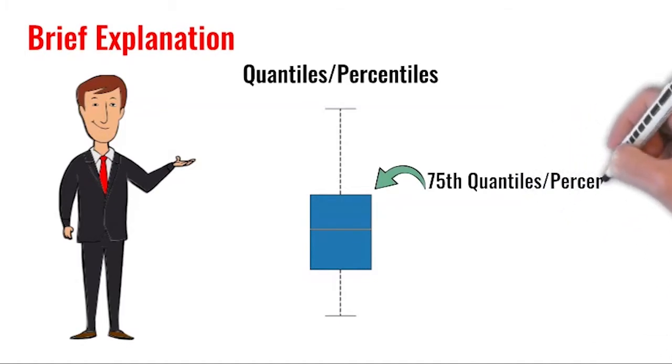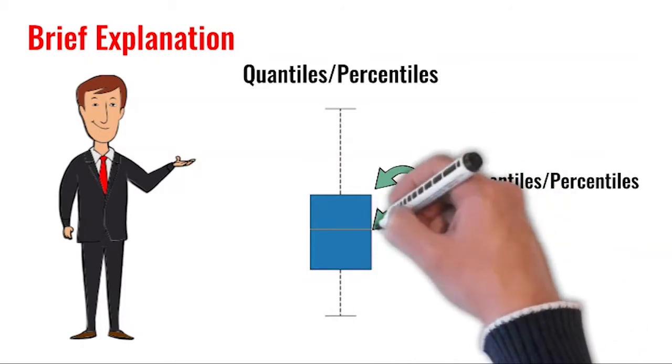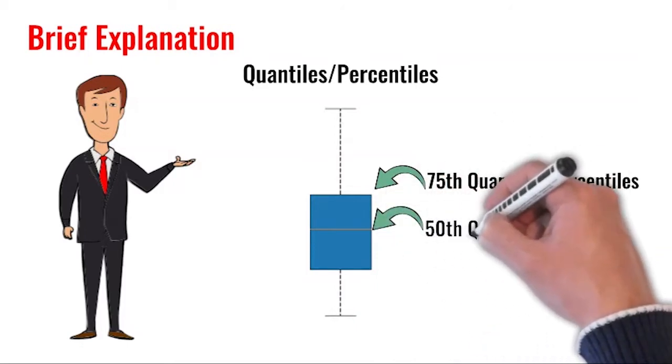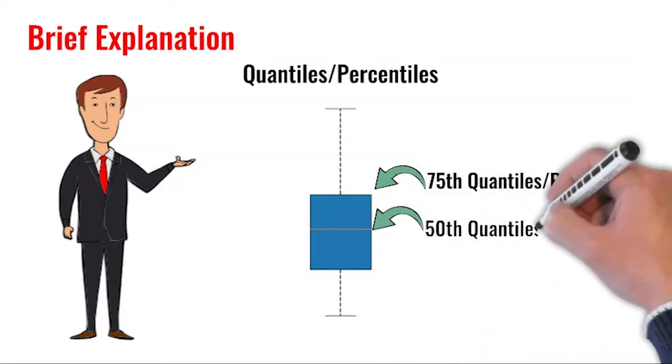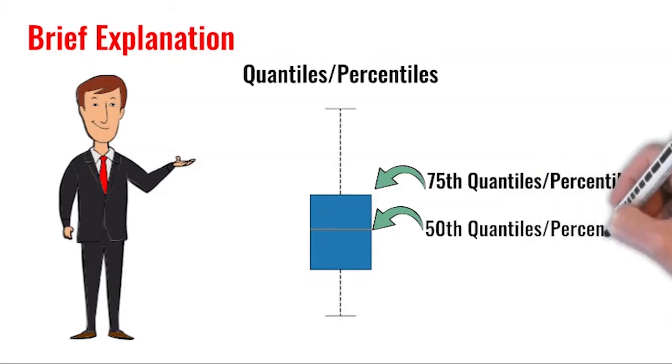When we say first quantile, only 1% of the data falls below that point and 99% is above that. 25th and 75th quantile points are also known as quartiles. There are three quartiles in the data set.